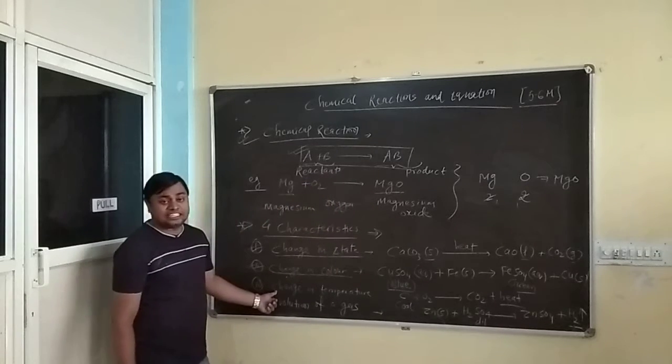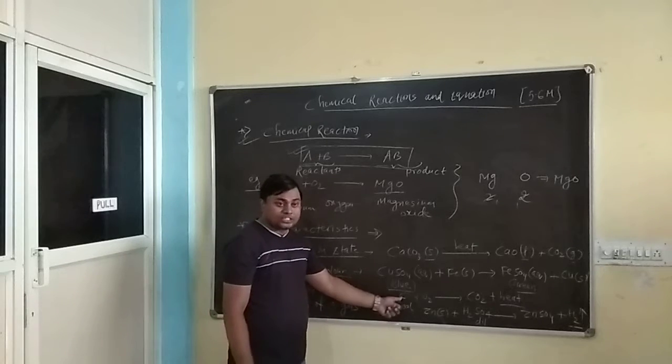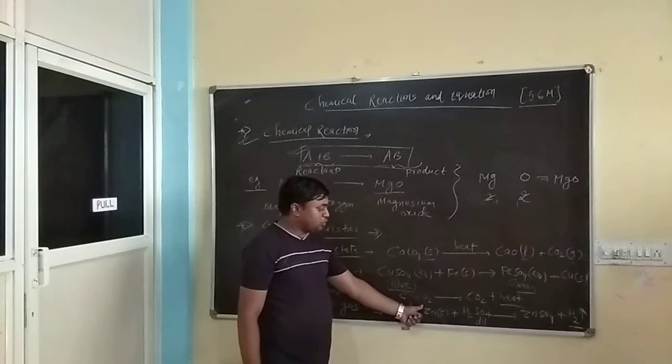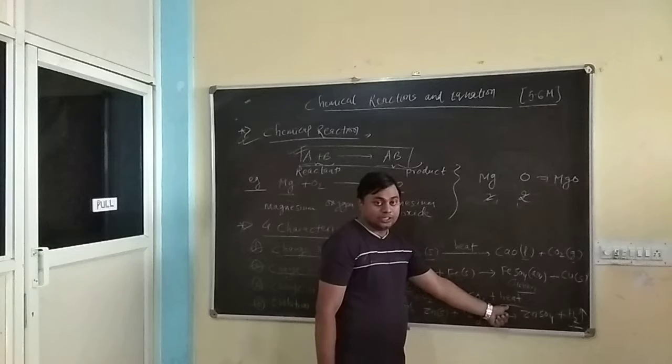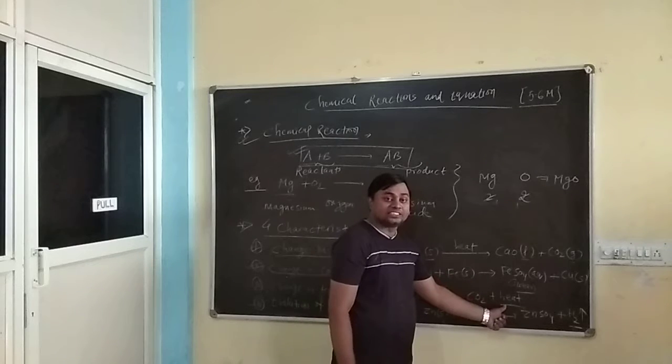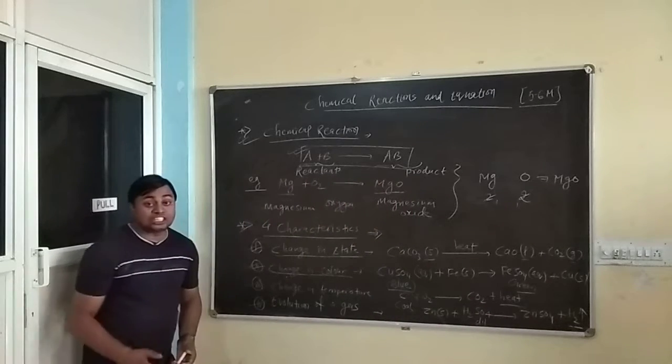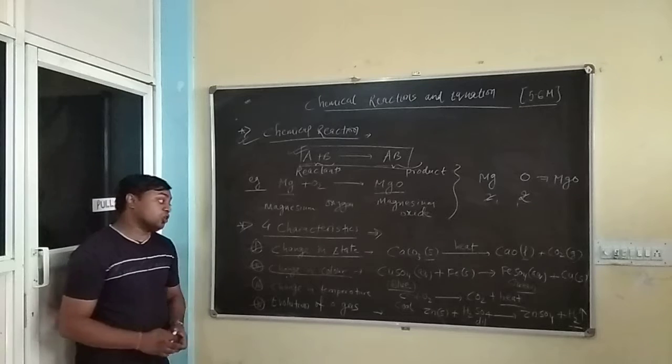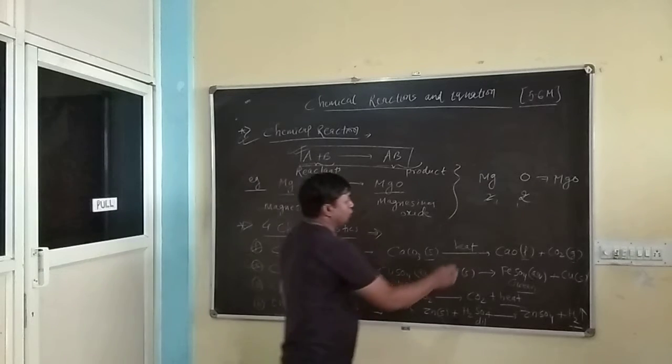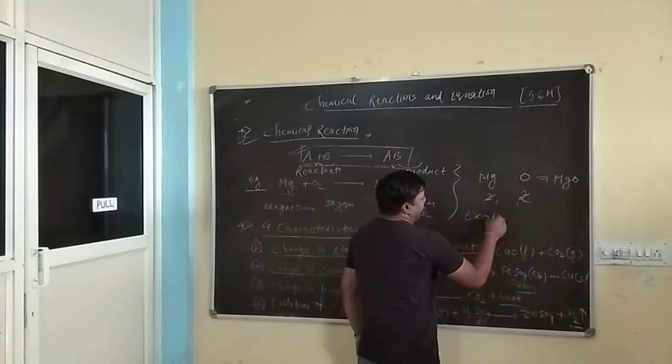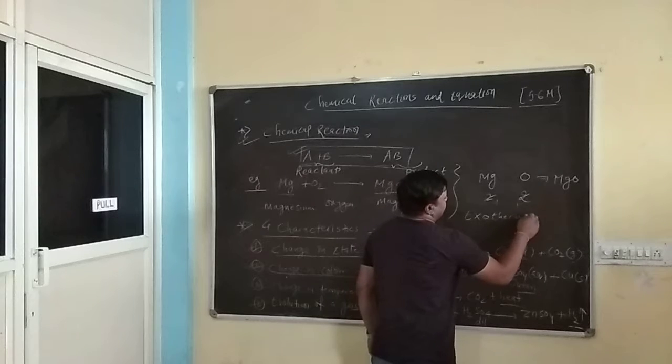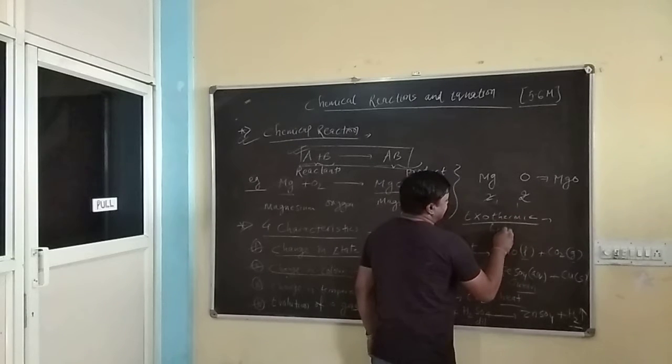3rd one change in temperature. For example if you burn coal, coal is nothing but carbon, burns with oxygen gives you carbon dioxide plus heat. So heat is released. So there is a change in temperature during the process. So it is a chemical reaction. So the reactions in which heat energy is released is also called as exothermic reaction. You should know exothermic and endothermic reaction. Exothermic reaction is the reactions in which heat is released.